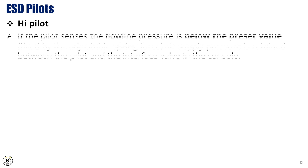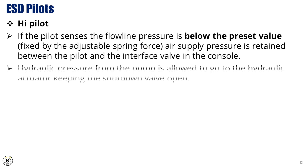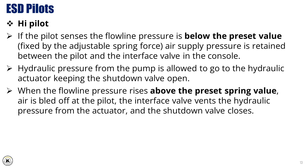High pilot: If the pilot senses the flowline pressure is below the preset value, fixed by the adjustable spring force, air supply pressure is retained between the pilot and the interface valve in the console. Hydraulic pressure from the pump is allowed to go to the hydraulic actuator, keeping the shutdown valve open. When the flowline pressure rises above the preset spring value, air is bled off at the pilot. The interface valve vents the hydraulic pressure from the actuator, and the shutdown valve closes.